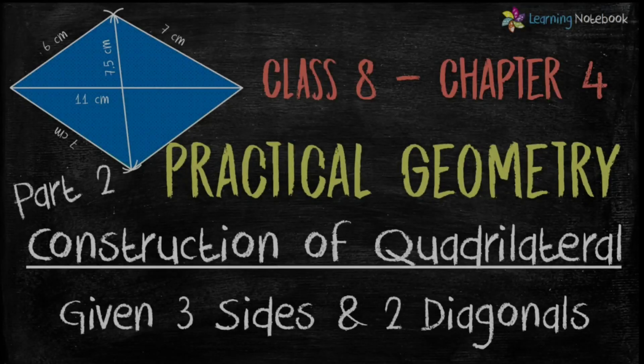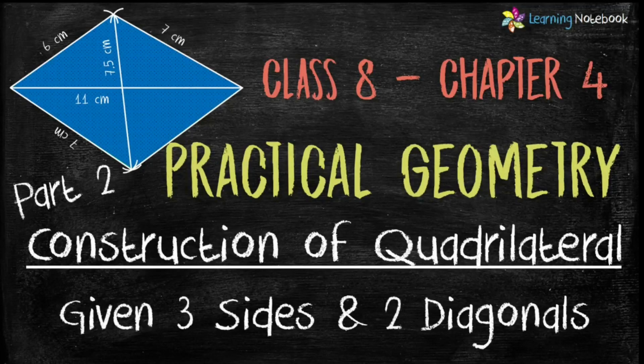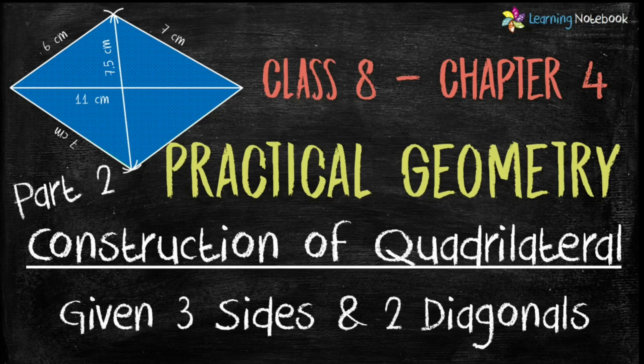Hello students, welcome to our channel Learning Notebook. In today's video we will do part 2 of chapter Practical Geometry. In the previous part we learned how to construct a quadrilateral when length of its four sides and one diagonal are given to us. Now today in this part, let's learn how to construct a quadrilateral when length of its three sides and two diagonals are given to us.